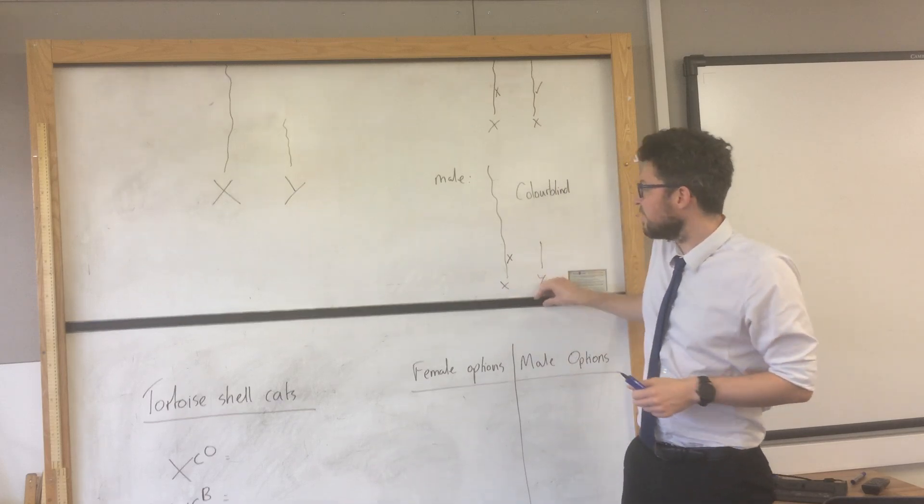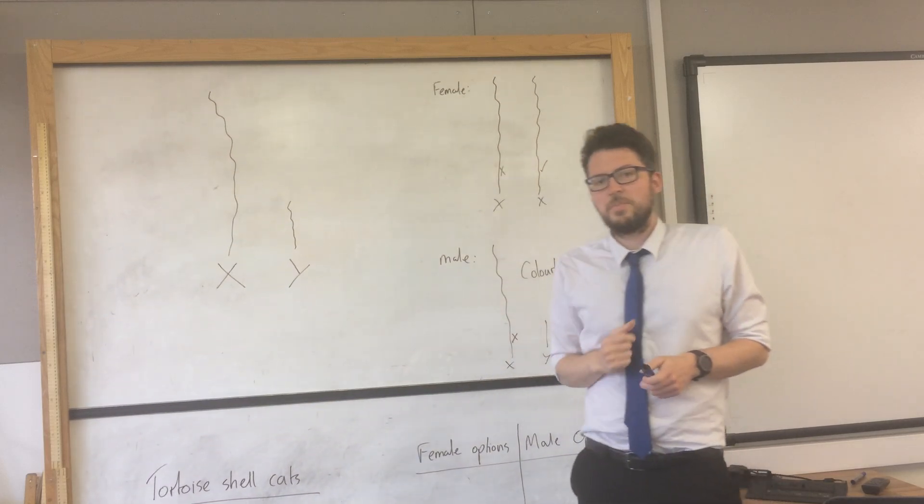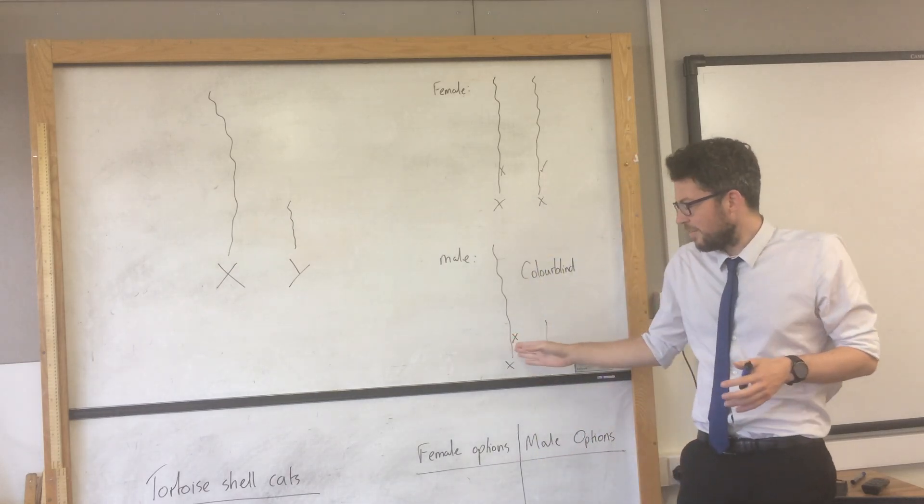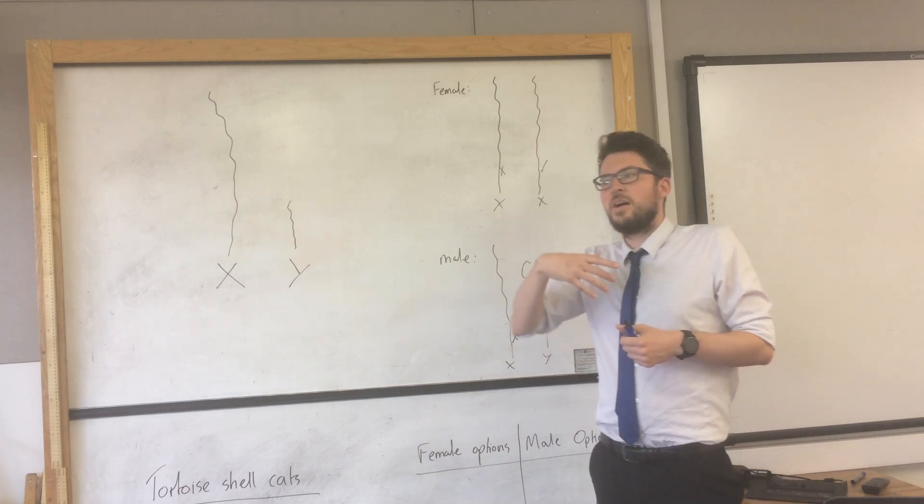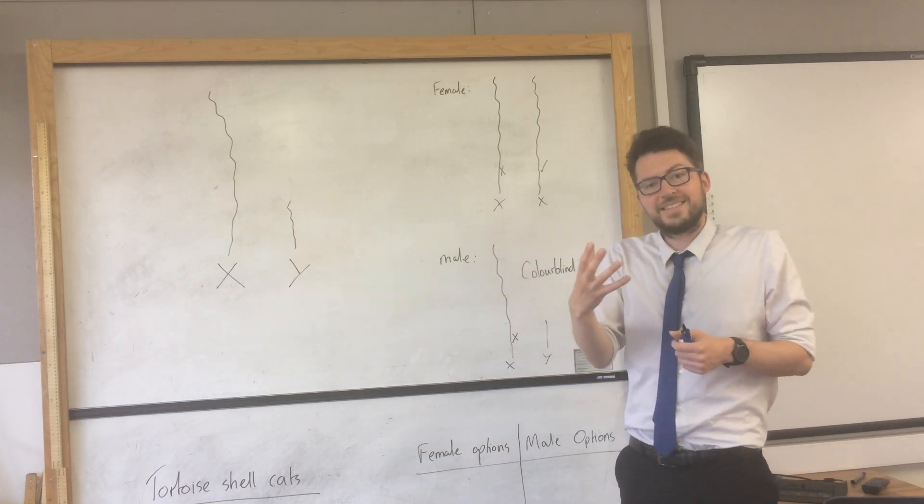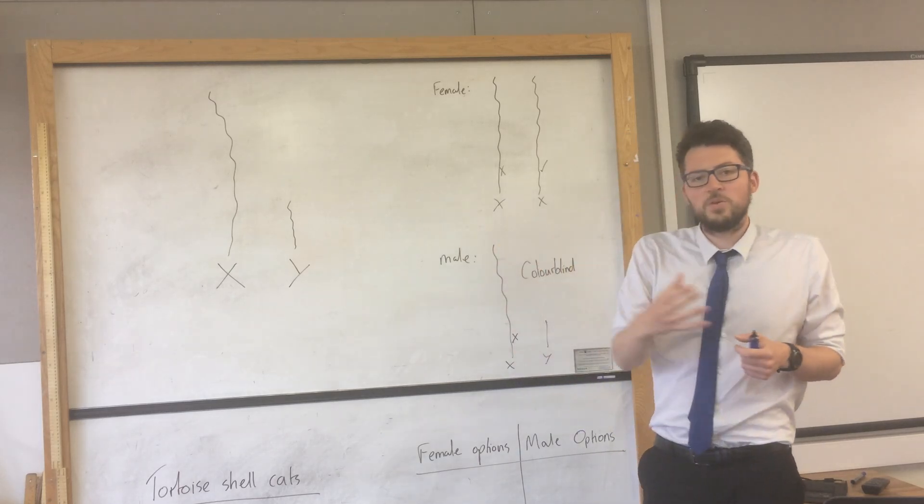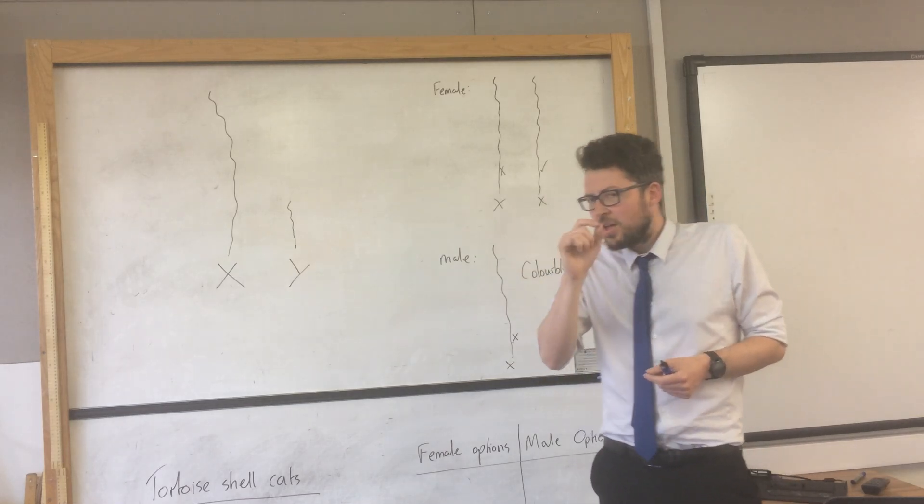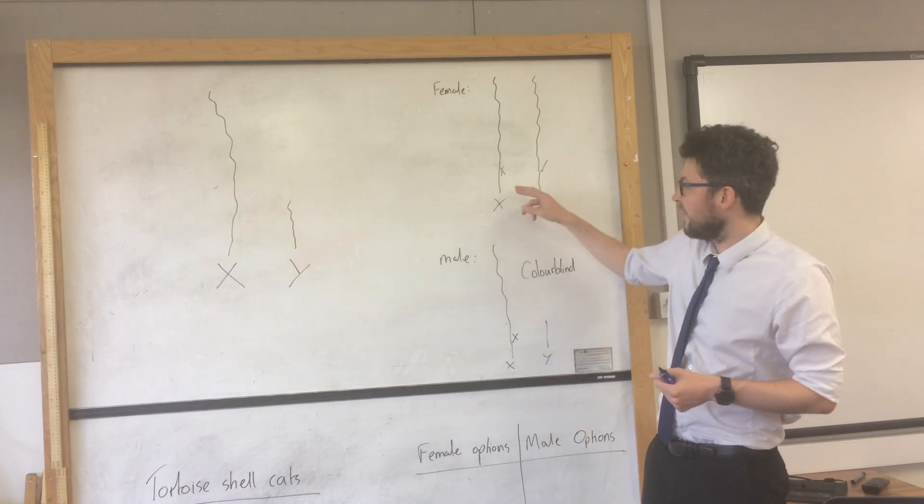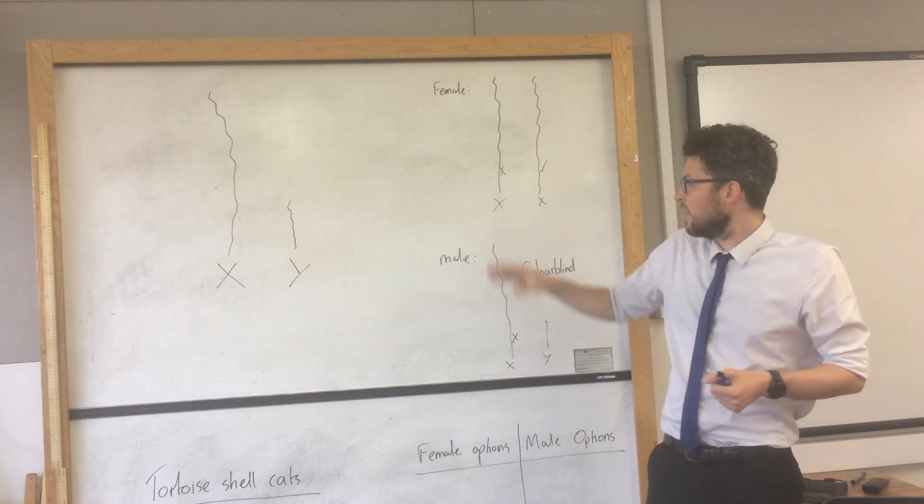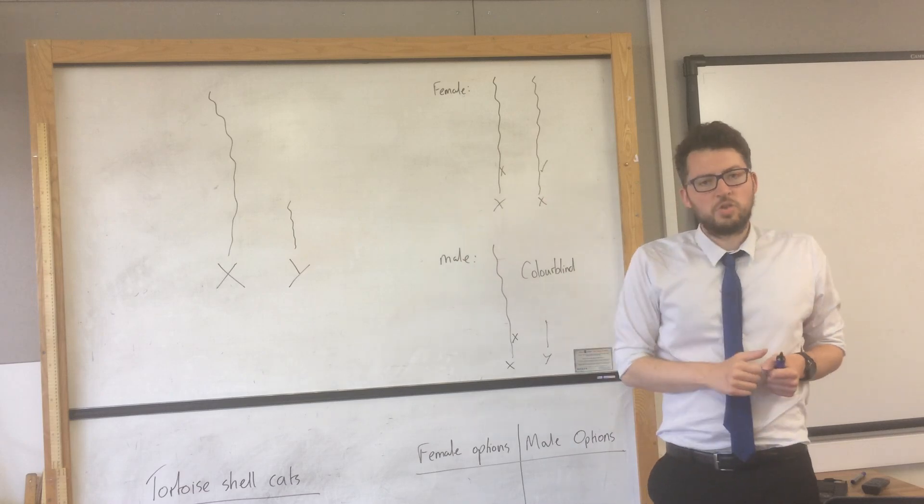So that is why males are far more likely to be colour blind than females, because they don't have the gene on the other chromosome to overpower or to mask the effects of that faulty colour vision gene. Females can still be colour blind, it's just very unlikely because they would have to inherit two faulty genes, one on each of their X chromosomes.